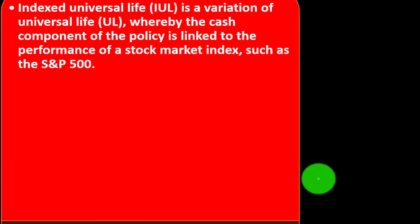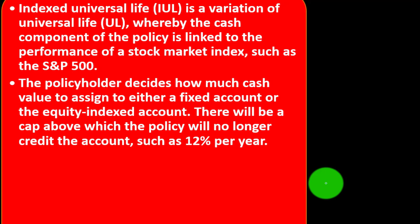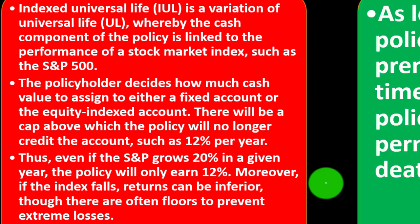Term life insurance is a low-cost option that provides a death benefit for a given number of years — such as 10 to 20 years. Unlike whole or universal life, term policies do not accumulate any cash value; term life is often the cheapest option. Indexed universal life (IUL) is a variation of universal life whereby the cash component of the policy is linked to the performance of a stock market index such as the S&P 500. The policyholder decides how much cash value to assign to either a fixed amount or the equity indexed account. There will be a cap — such as 12% per year — above which the policy will no longer credit the account, so even if the S&P grows 20% in a given year, the policy will only earn 12%. If the index falls, returns can be inferior, though there are often floors to prevent extreme losses.